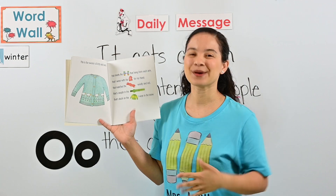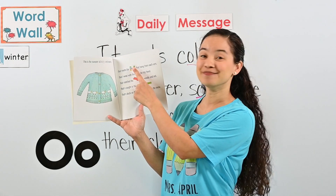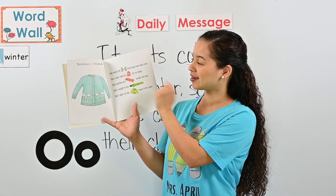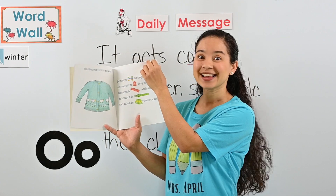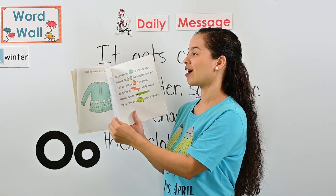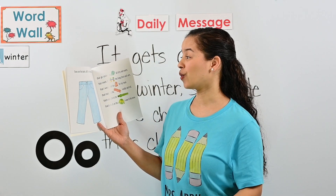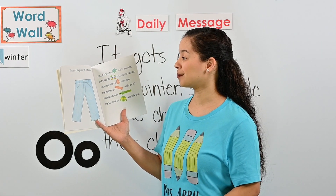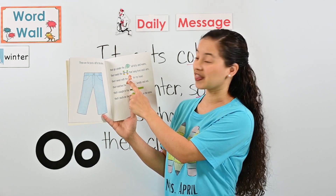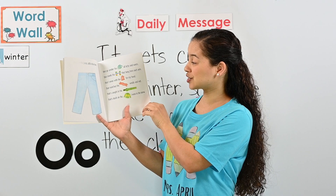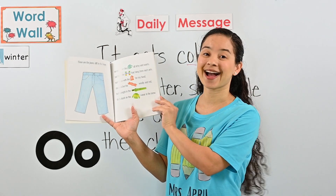Let's go over the different things he's wearing so far in the snow: a sweater, mittens, a stocking cap, a scarf, and a zipper on his jacket. Let's see what else he needs. 'These are the jeans, stiff in the knee, that go under the sweater, all itchy and warm, that meets the mittens that hang from each arm, that I wear with the stocking cap for my head, that matches the scarf, wooly and red, that's caught in the zipper, that's stuck on the jacket I wear in the snow.'